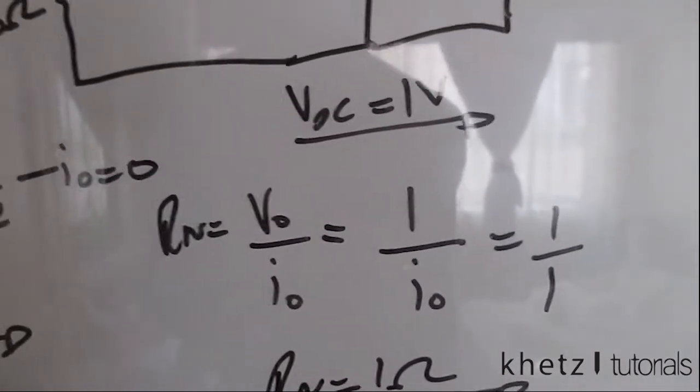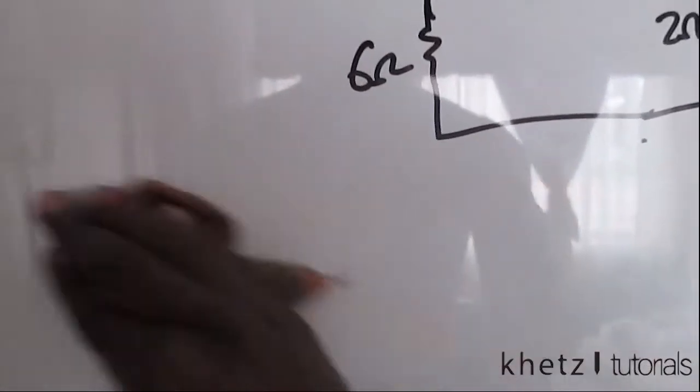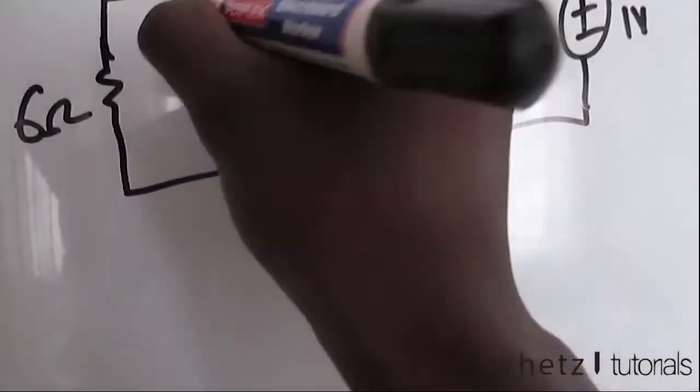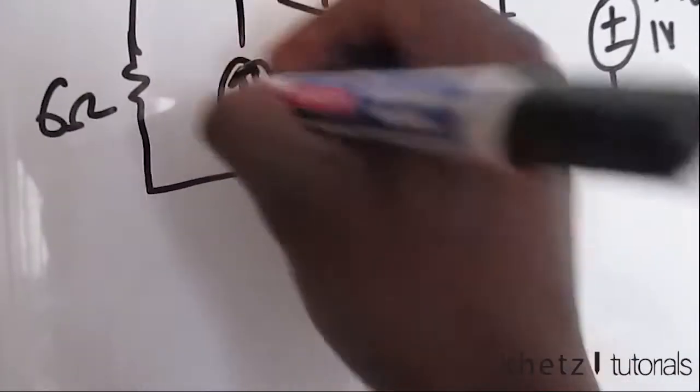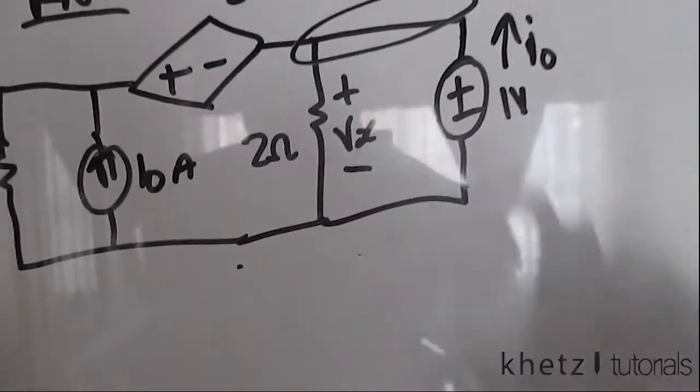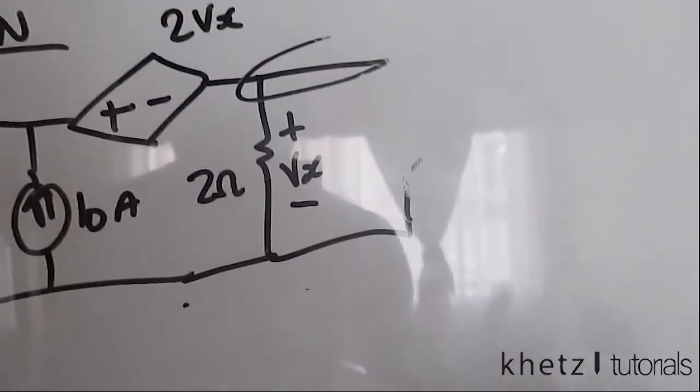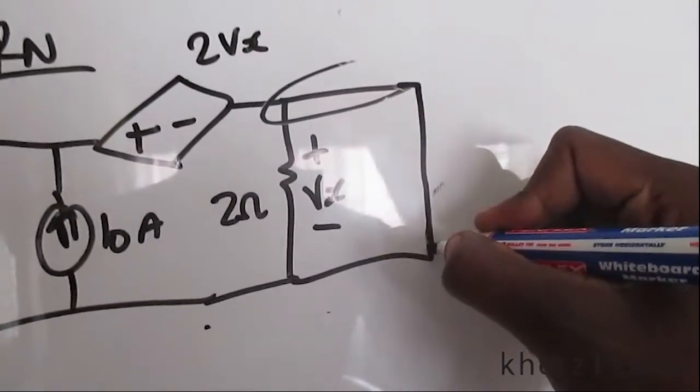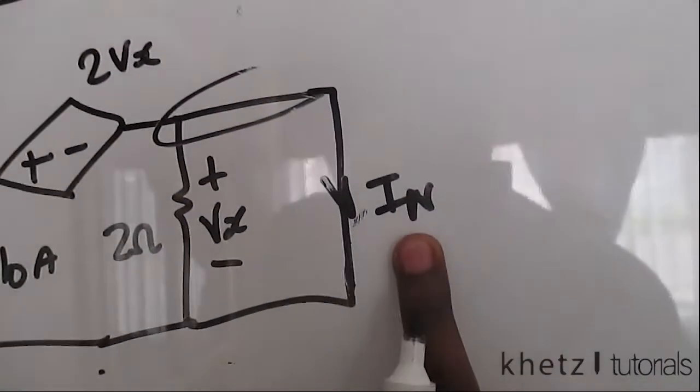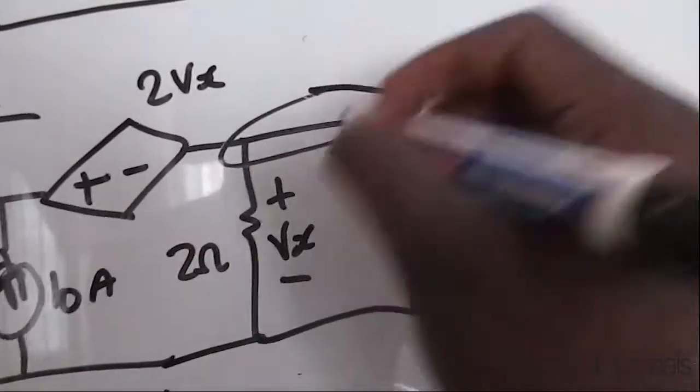That is how you find Rn. We are now going to move on to find the Norton equivalent current. We're going to draw back that current source which we had, draw it back into its position, then we're going to remove the test source and replace it with a short circuit current. This is what we are basically interested in finding.